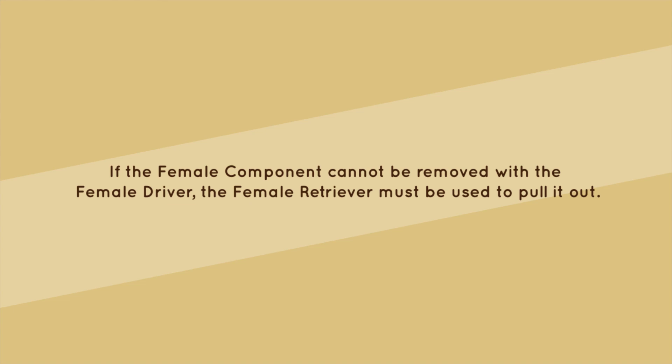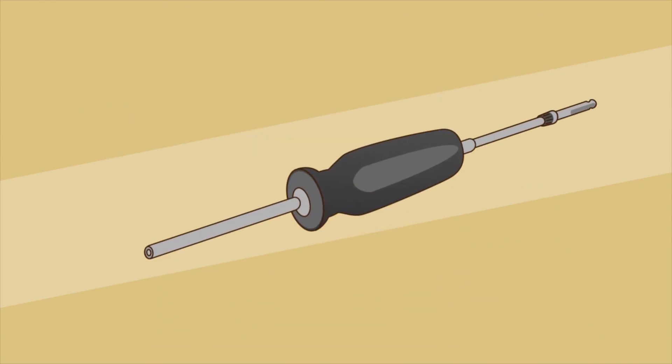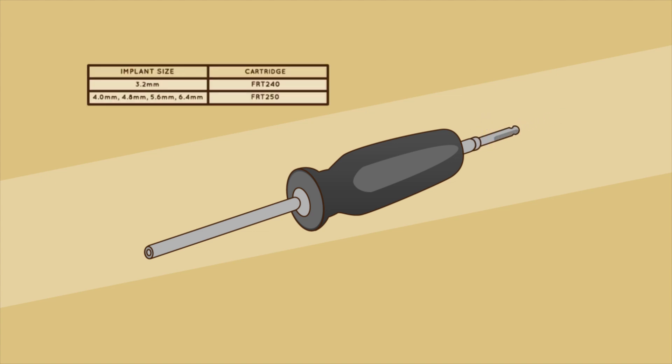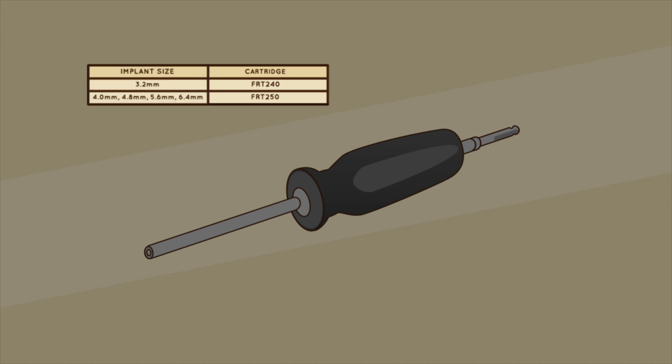Step 3. If the female component cannot be removed with the female driver, the female retriever must be used to pull it out. Step 4. To assemble the female retriever, insert the female retriever driver in the female retriever handle and thread it. Step 5. Then choose the cartridge that matches the size of the implant.